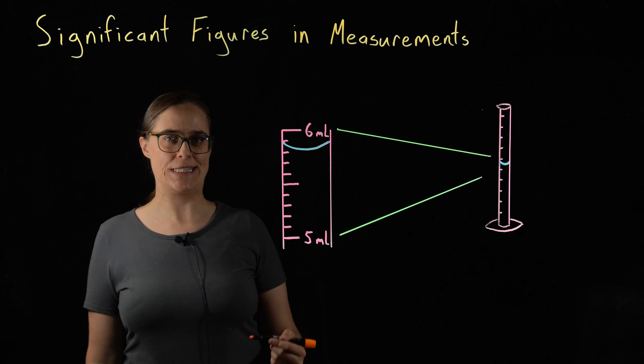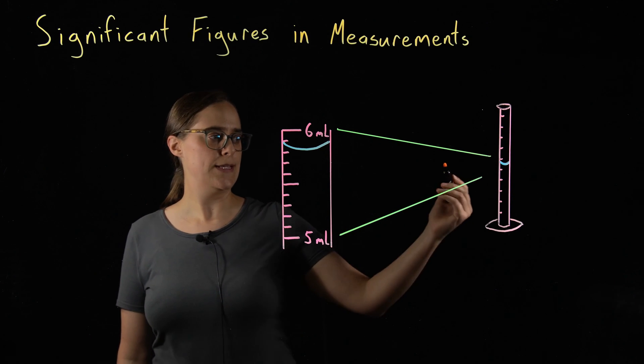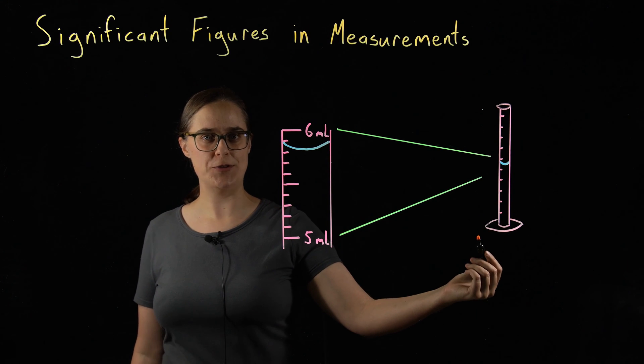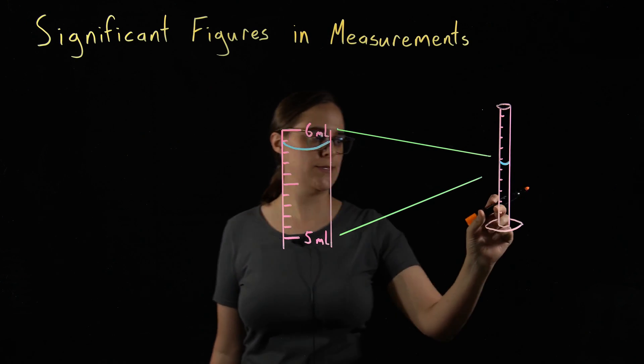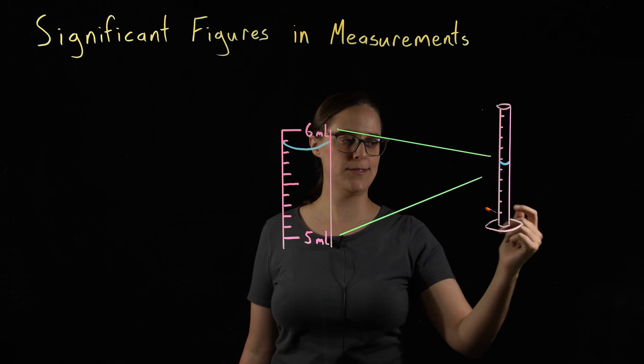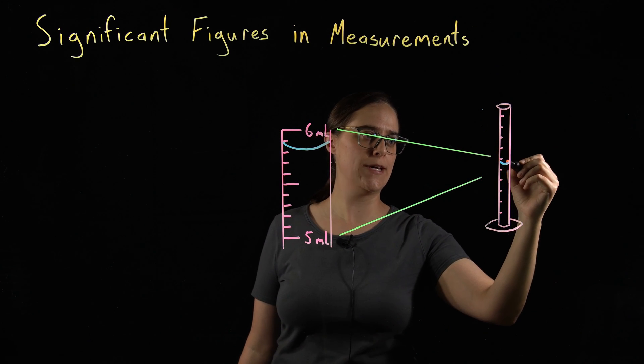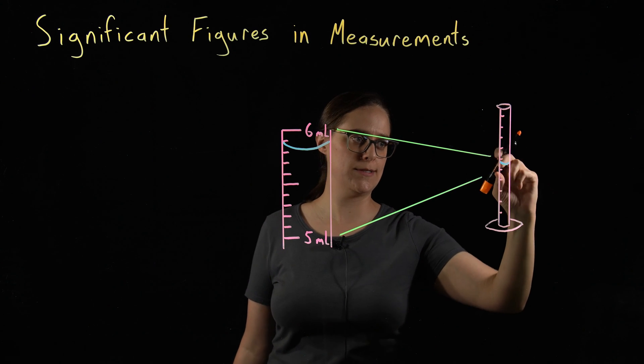I want to give you another example of an analog readout. This is a piece of glassware called a graduated cylinder. It is used to measure the volume of liquids. So it is a tall, narrow glass tube that you put a liquid in, and you look at the line where the top of the liquid is.